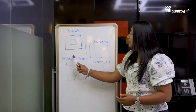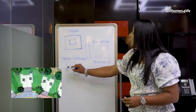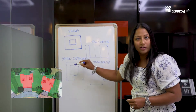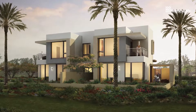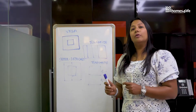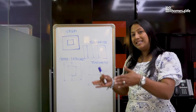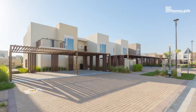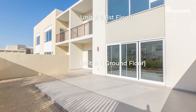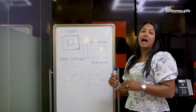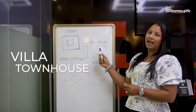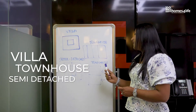A semi-detached would be two villas on one particular plot — one big plot with two units. That's a semi-detached villa or townhouse. A townhome, essentially, is a building with two stories — the ground floor and the first floor — with two separate houses with different entrances. I hope this clarifies the difference between a villa, a townhouse, a semi-detached, and a townhome.